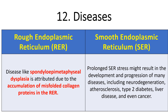Regarding associated diseases: spondyloepimetaphyseal dysplasia is associated with the accumulation of misfolded collagen protein in the rough endoplasmic reticulum. Whereas prolonged smooth endoplasmic reticulum stress may result in the development and progression of many diseases such as neurodegeneration, atherosclerosis, type 2 diabetes, liver disease, and ultimately even cancer.